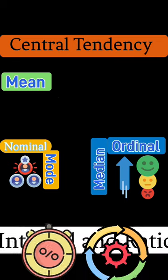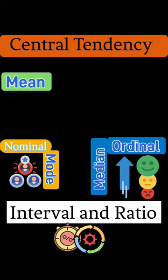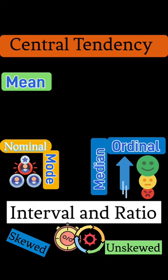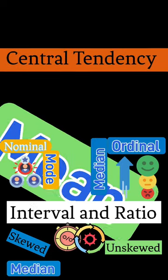For interval and ratio data, it depends on whether the data is skewed or not. When the data is skewed, the median is the best measure. But when the data is not skewed, then the best measure is the mean.